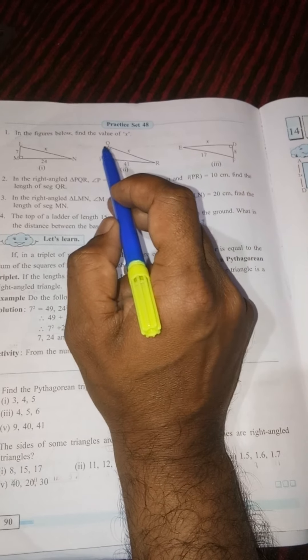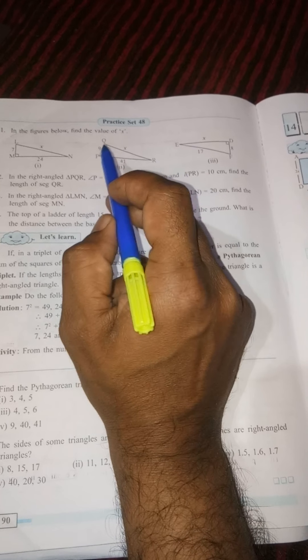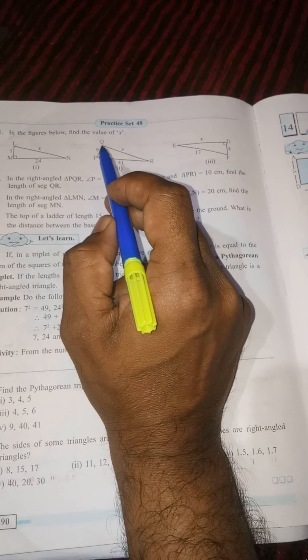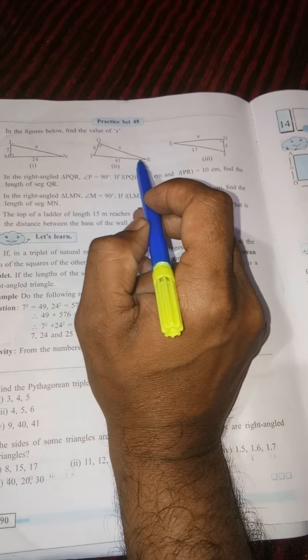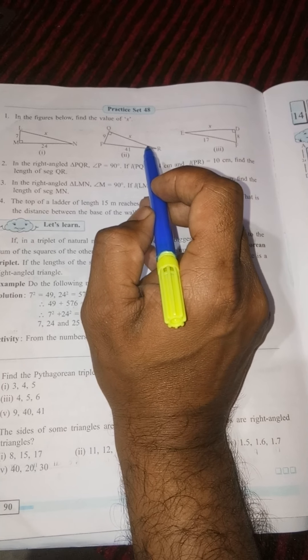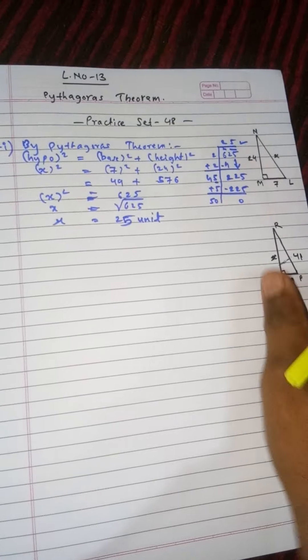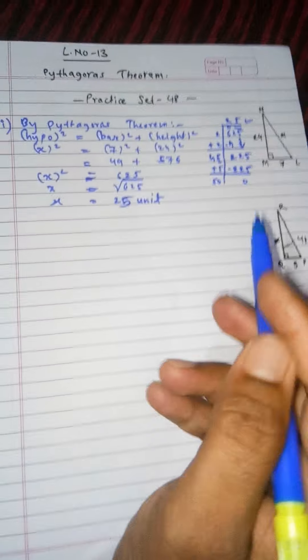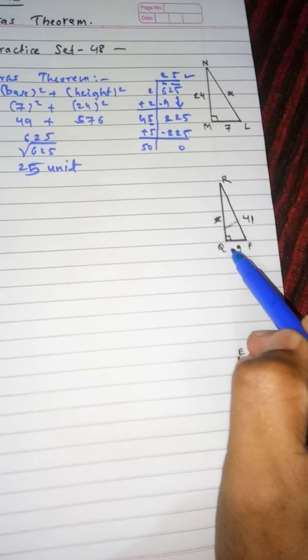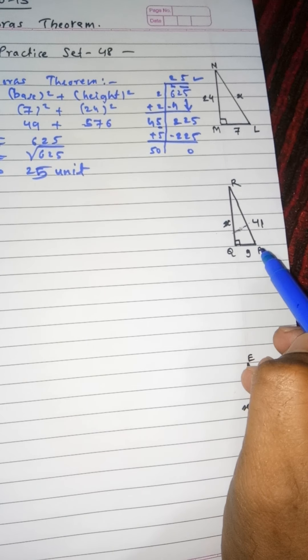QR is our x, so we have to find x. As this is the base, this is the hypotenuse, so this is the height. Again for your convenience I have drawn the figure for you.